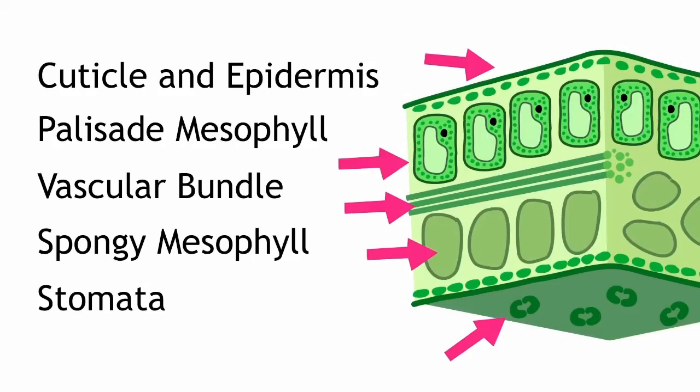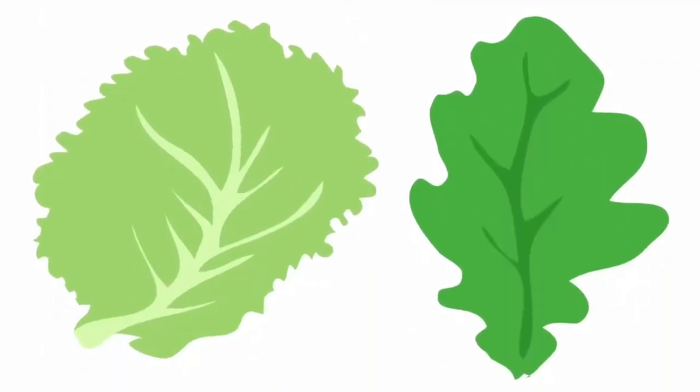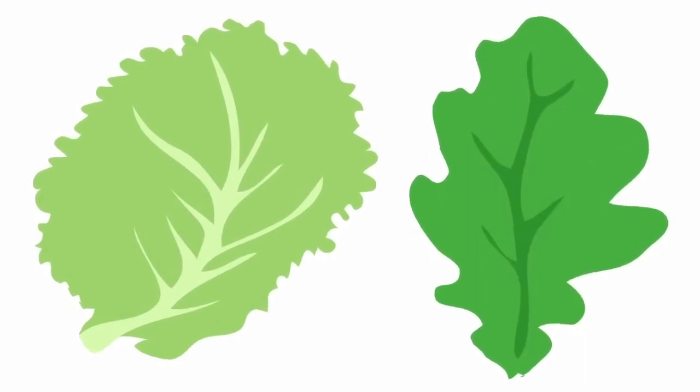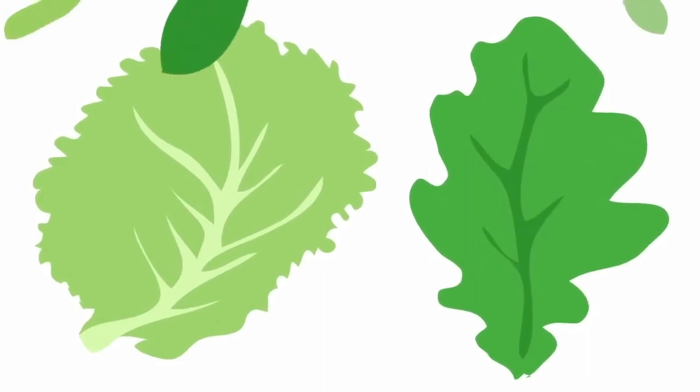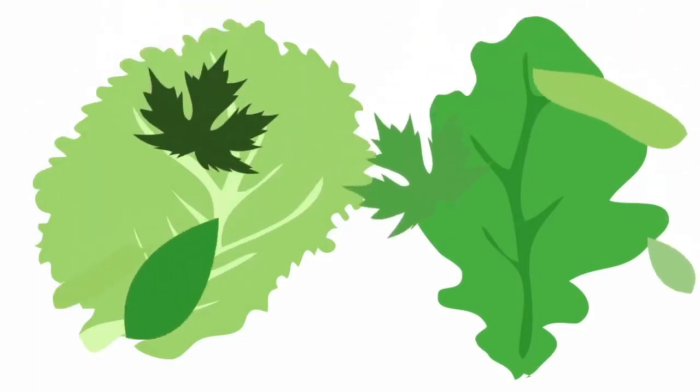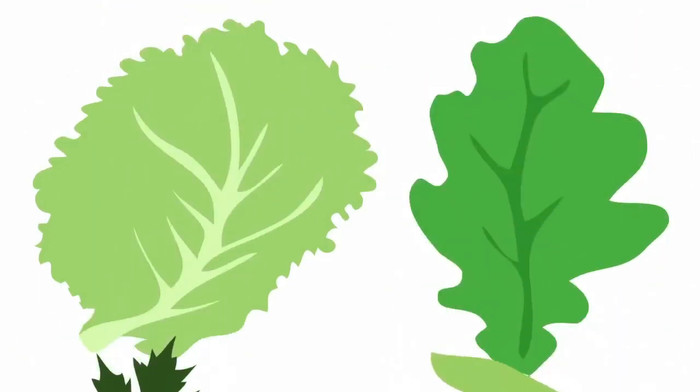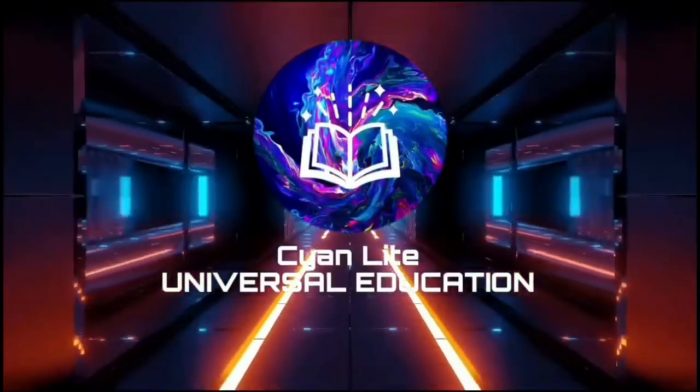Leaves come in all different shapes and sizes. Look at a cabbage leaf and an oak tree leaf. But most of them have these same parts in common, which allow them to get their reactants in and perform photosynthesis.